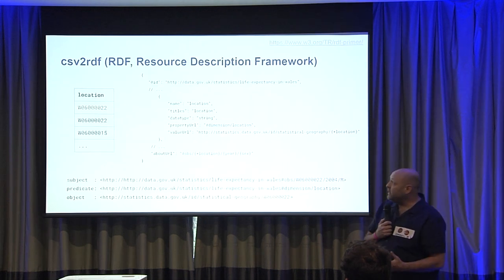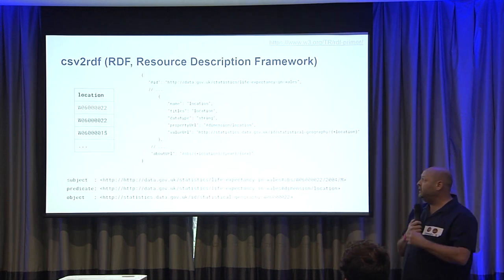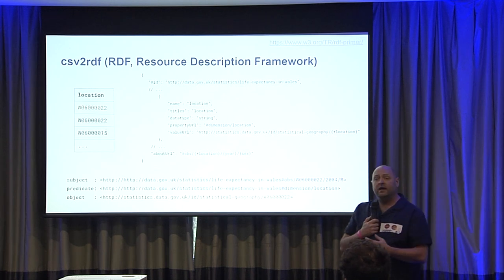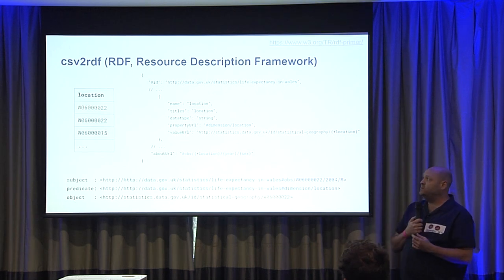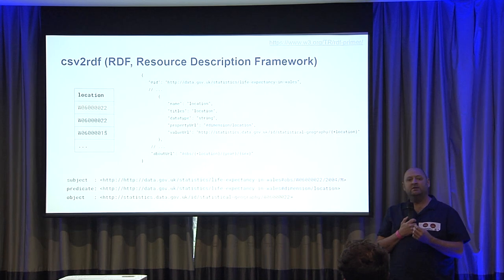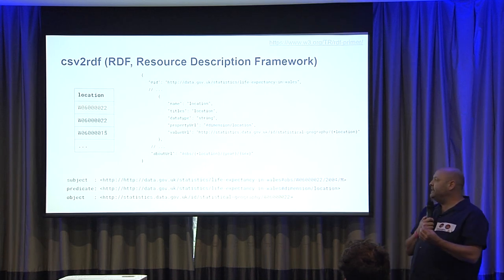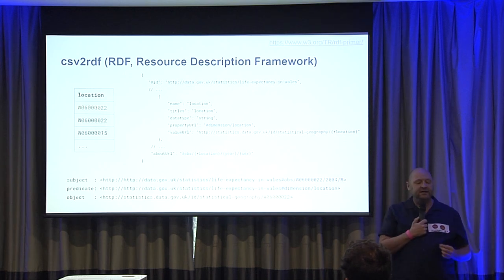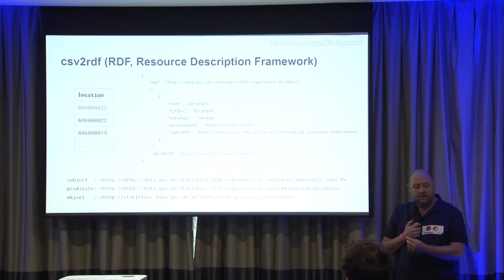Another further value add: once we've created our CSVW — we've got the JSON file, we've got the CSV — there's an open source tool we're using called CSV2RDF. It adds that semantic layer to our data to provide that linked data foundation, so you can see the subject, predicate, and object. It provides an easier way for our data to connect to other data on the web as well.